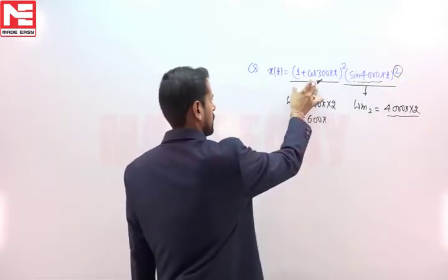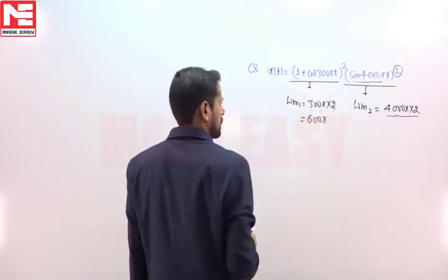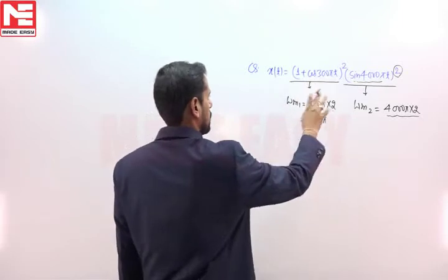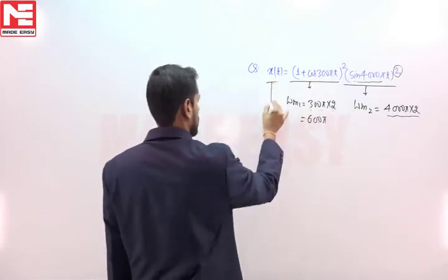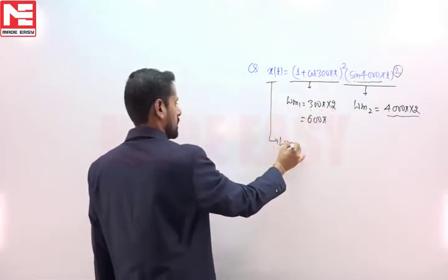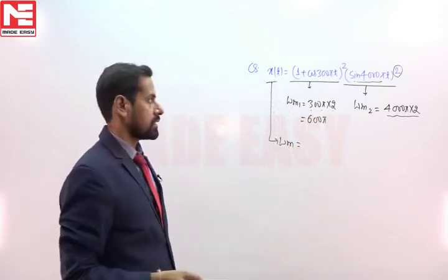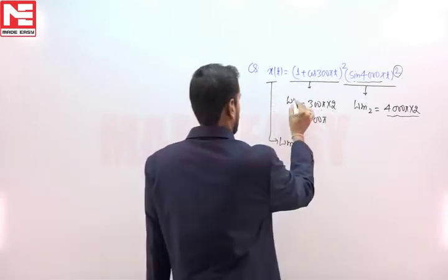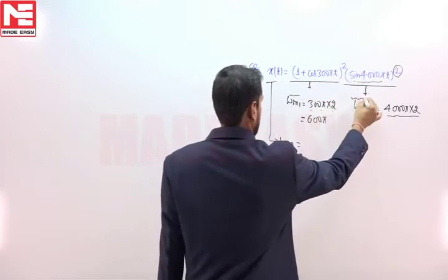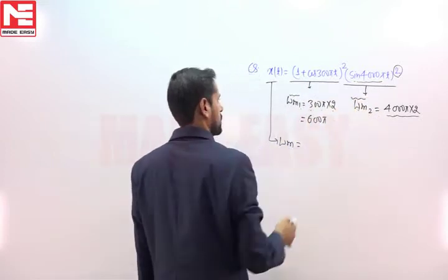In the first part, we did the same thing. Now, these two signals are multiplying, and if signals are multiplying, then maximum frequency component of the result is given by adding the maximum frequency components of individual signals.